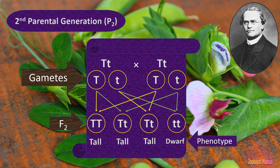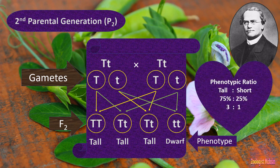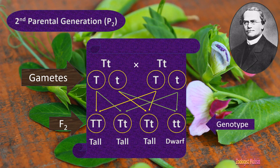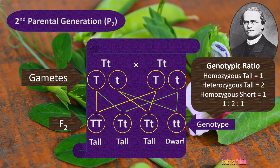This is called the phenotype — the apparent expression. The phenotypic ratio here is tall 75% and short 25%, so the simplest ratio between 75% and 25% is 3:1. Similarly, these are the genes, alleles, or genotype, and the genotypic ratio is homozygous tall 1, heterozygous 2, and homozygous short 1, giving a typical genotypic ratio of 1:2:1.